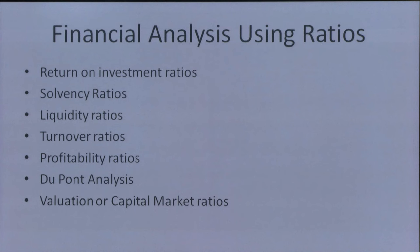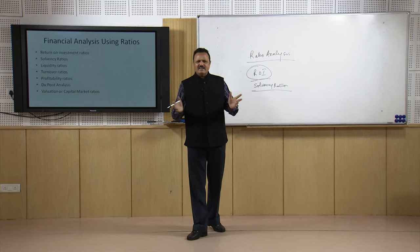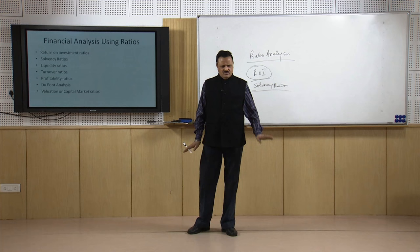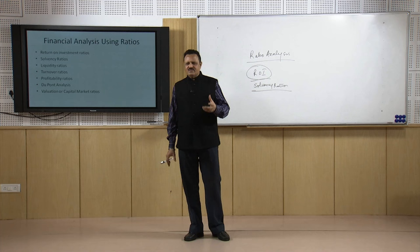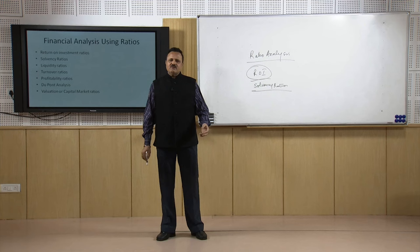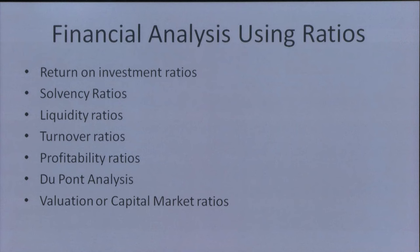Then is DuPont analysis. DuPont is a US company working in different fields — agriculture, chemicals, consultancy and many more areas. They have developed certain ratios — just 3 to 4 ratios — and they are of the view that if somebody is able to calculate these 3-4 ratios efficiently, there is no need to calculate any other ratios. You can have a very good idea about what the firm is all about, how it will perform in future, and what its potential is.